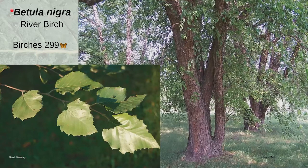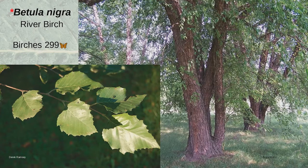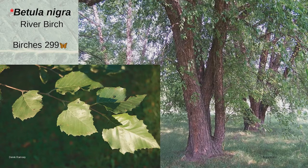Betula nigra, river birch, is another keystone in our area. It grows 40 to 70 feet in full sun to part shade, medium to wet soil. It's grown as a shade tree or rain garden tree, is fast-growing, and has either single or multiple trunks with peely reddish bark — which is a really strong selling point when people buy it. Its wood is used in furniture, but it does cause allergies in a lot of people, so if you have lots of allergies, you'll find many of our trees are problems.